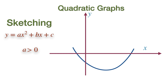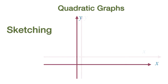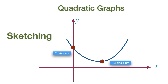Other important points we need to show in our sketch are the Y-intercept, the turning point, and the X-intercept. It's possible that sometimes the quadratic graph does not have all the necessary critical points like the X-intercept. In this situation, we can use the Y-intercept and the turning point to sketch the graph.